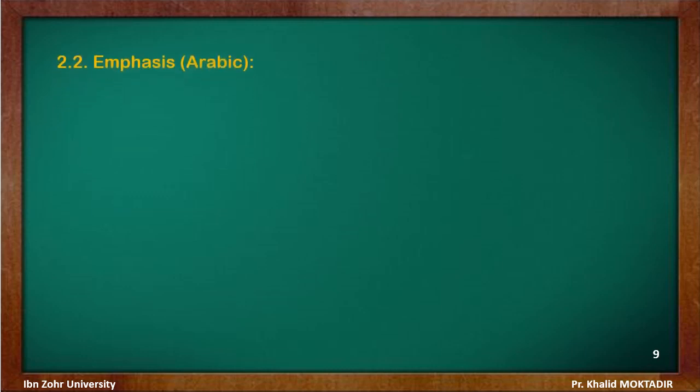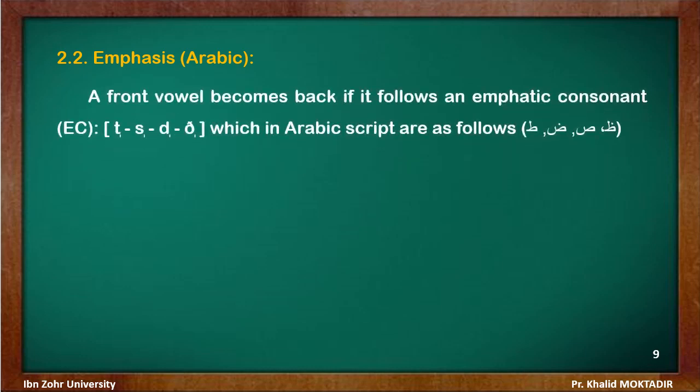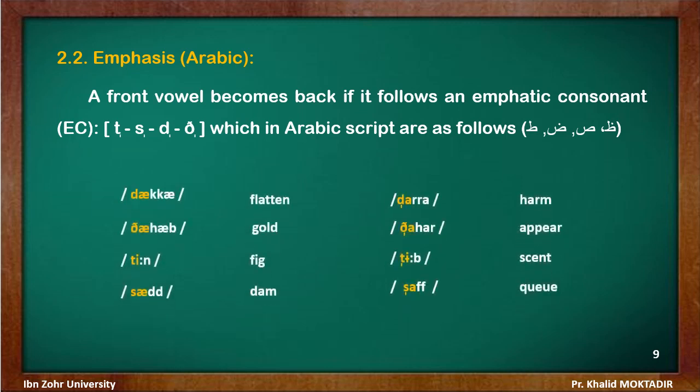Another example of how vowels assimilate consonant features can be seen in Arabic, in emphasis. A front vowel becomes back if it follows an emphatic consonant. Emphatic consonants in Arabic include T, S, D, and V, written as follows in Arabic script. Now look at the examples.